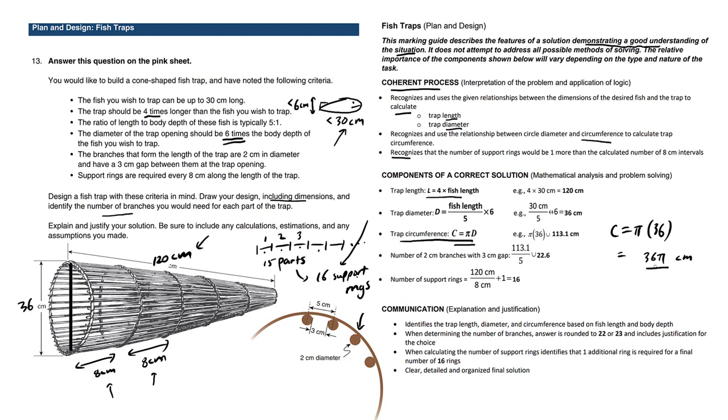Now, what's interesting here is that this is true for the opening circumference. However, if this is a cone shape, I would imagine that the circle towards the end of the other side of the fish trap would be a bit smaller. So this here is important to note.